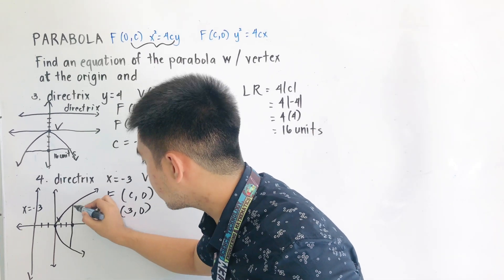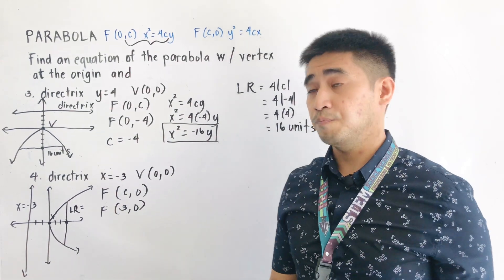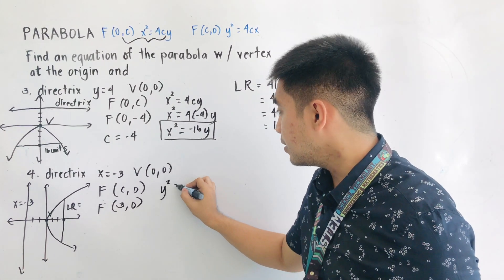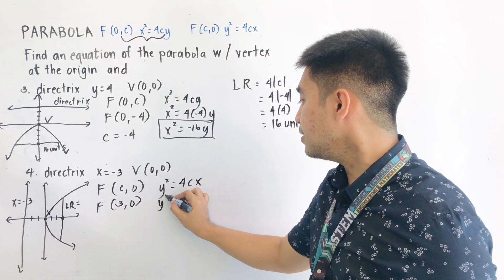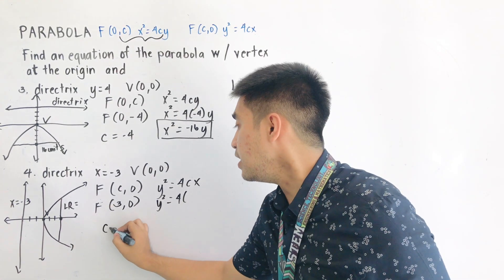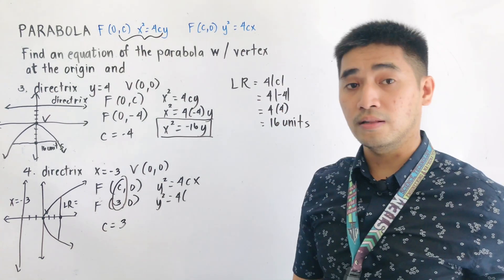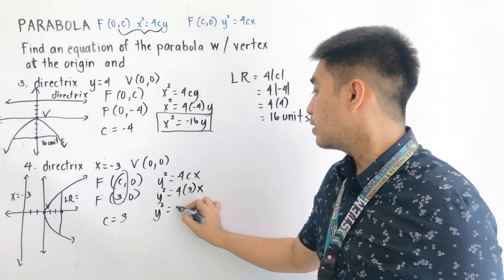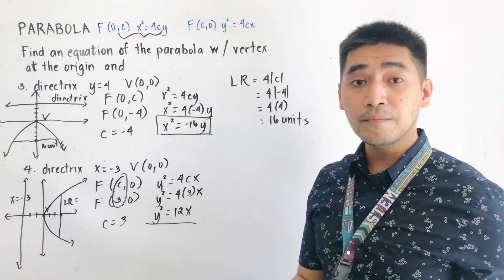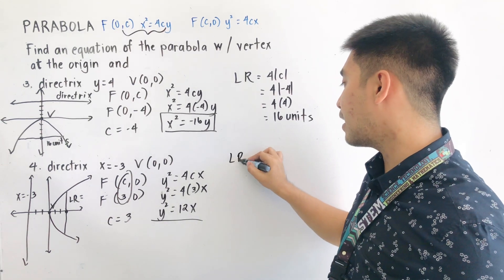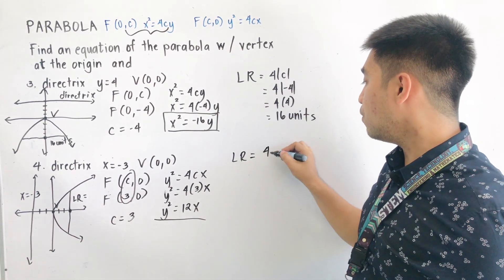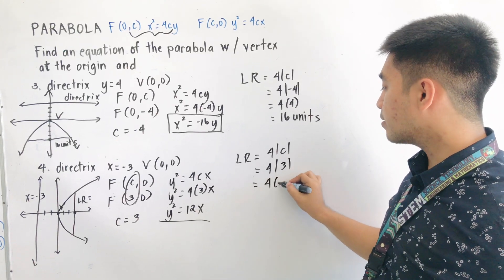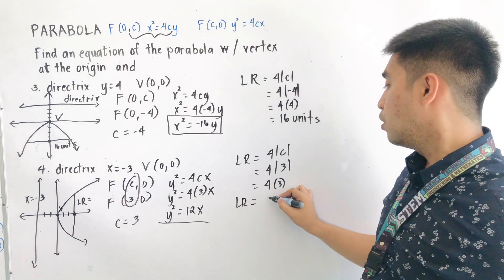This is our latus rectum, and we do not yet know its length. Let us first write the equation of the parabola. Using y squared equals 4cx and substituting c equals 3: y squared is equal to 4 times 3 times x, therefore y squared is equal to 12x. This is the equation of our parabola opening to the right. The length of the latus rectum is 4 times the absolute value of c, which is 4 times 3, so the latus rectum is 12 units.